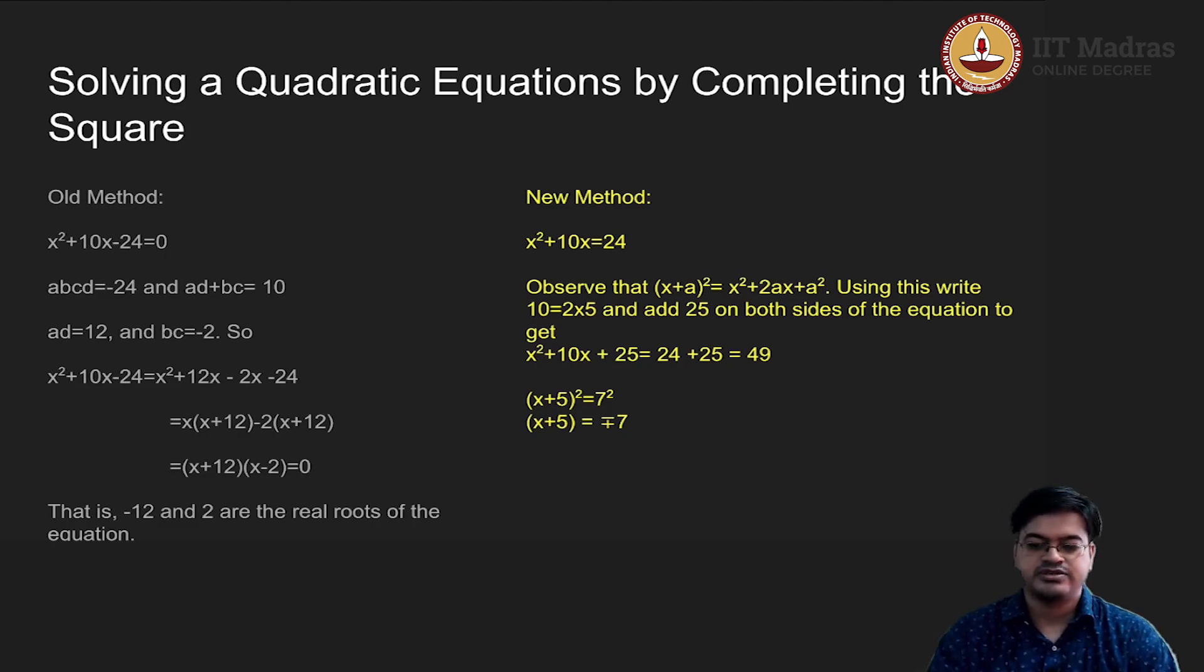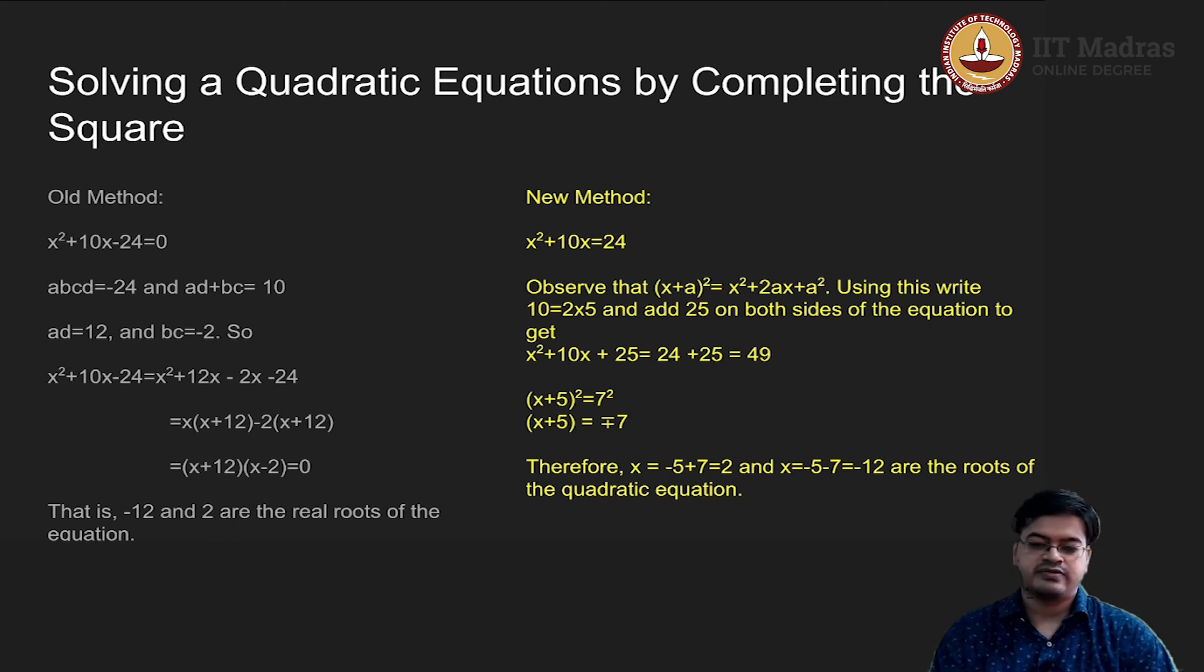Once I have considered this, then I know the solution. It is just a matter of substituting the values and doing some algebra. You subtract 5 from both sides. So x is equal to -5 + 7 which will give me 2 and x is equal to -5 - 7 which will give me -12. These are the roots of the quadratic equation. These exactly match with the roots that we have got: -12 and 2. The solution set is the same.